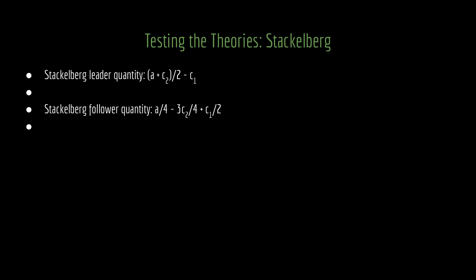Under Stackelberg, we have to do a little bit of calculation. We already know that the leader's quantity is (A plus C2) divided by 2 minus C1, and the follower's quantity will be A divided by 4 minus three-fourths C2 plus one-half C1. With symmetric firms, this simplifies to the leader's quantity being (A minus C) divided by 2 and the follower's being (A minus C) divided by 4. The leader's quantity is more than what happens under Cournot, where each firm is producing (A minus C) divided by 3, so it's looking like the leading firm has an advantage. Meanwhile, the following firm is producing less than it would under Cournot, so it looks like the follower has a disadvantage.